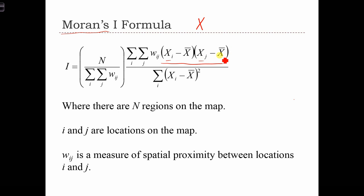If they're both below the mean, then our cross-product term will be positive. But if i is above the mean, and j is close to i in space, but if j is below the mean,